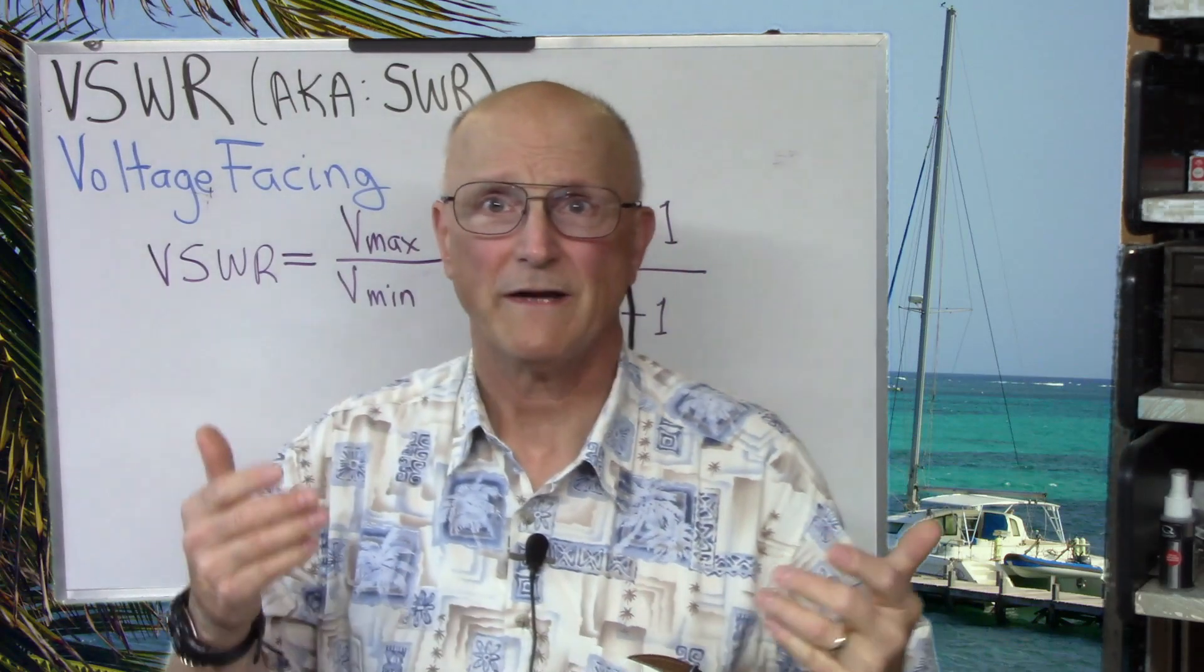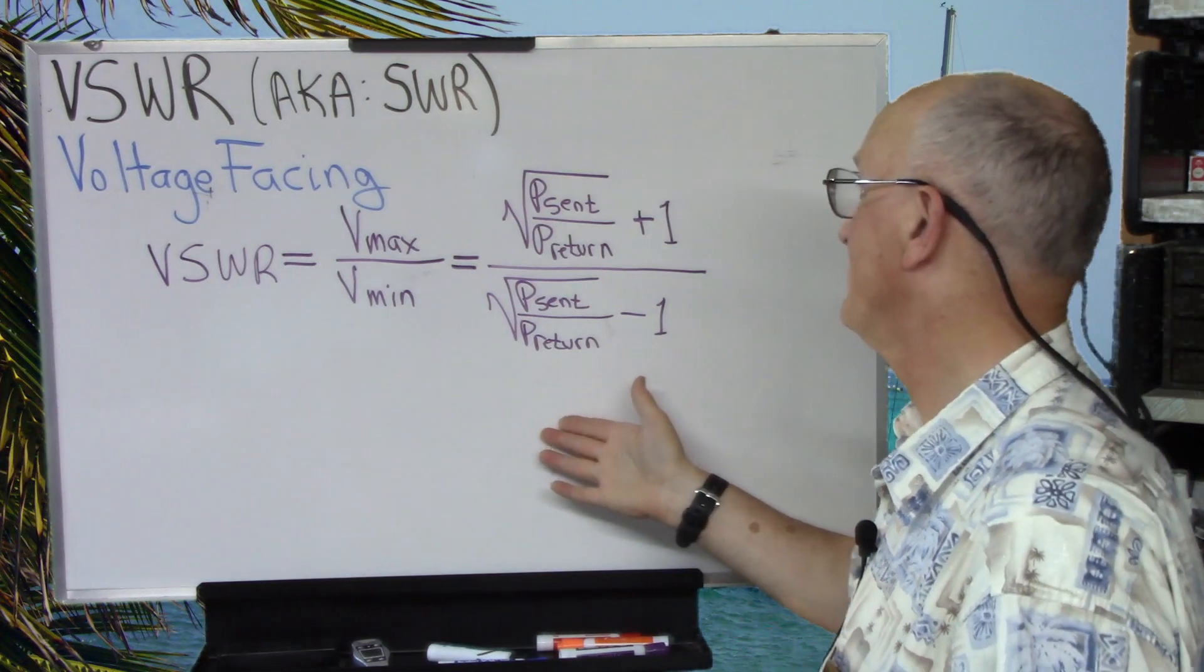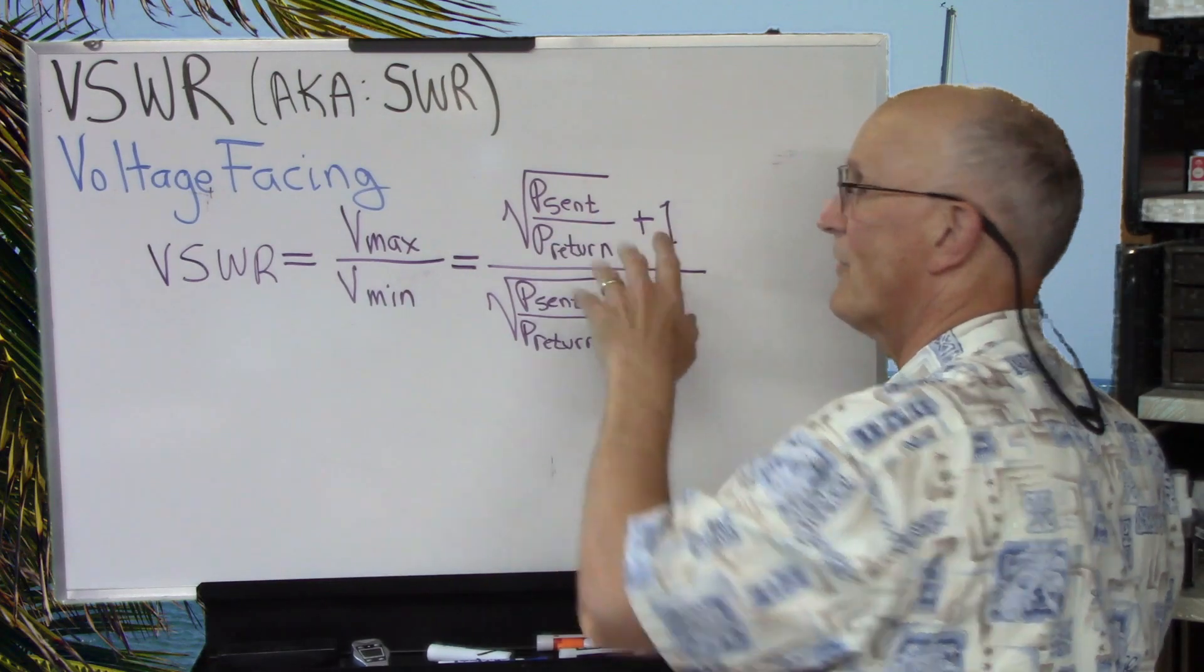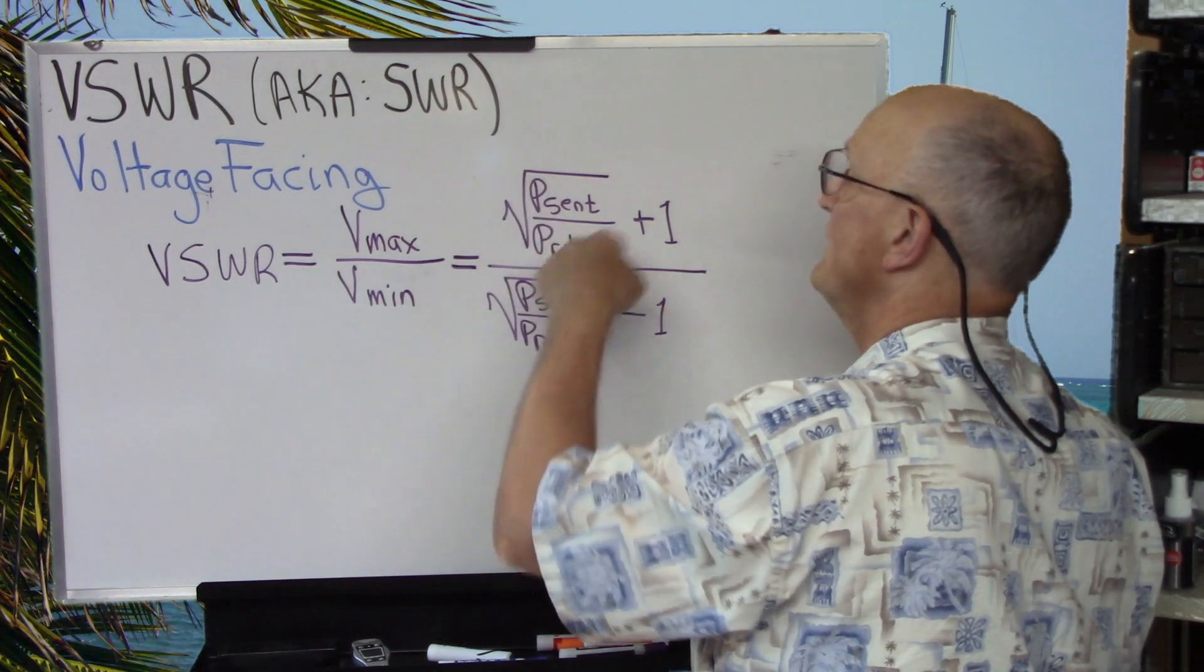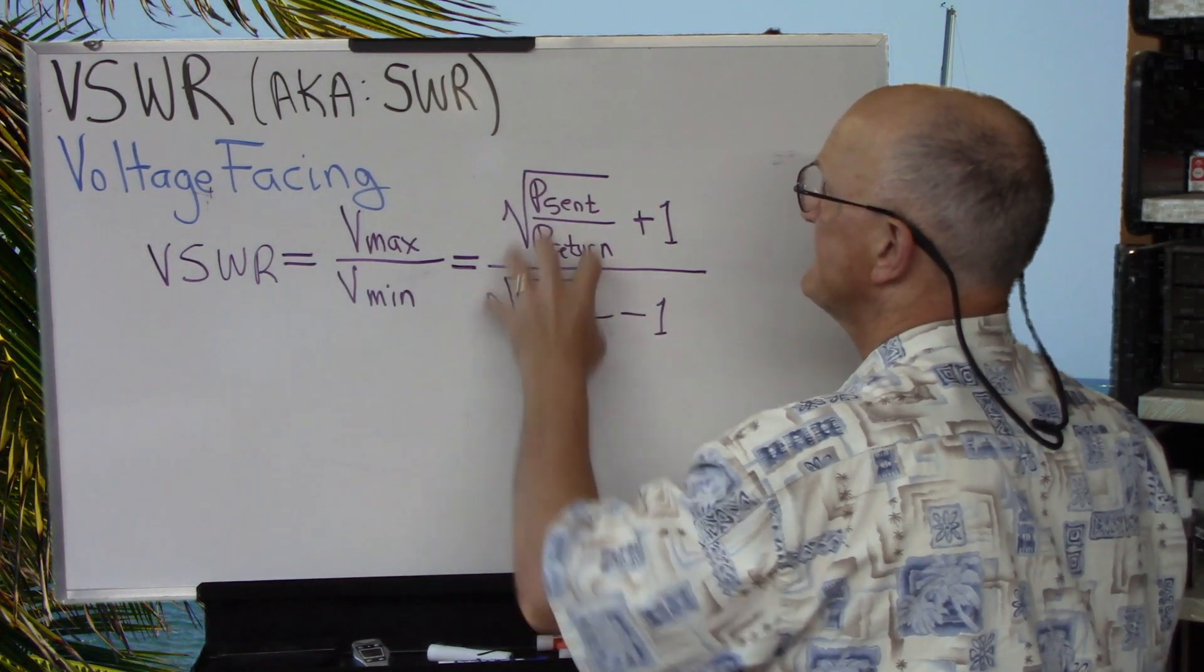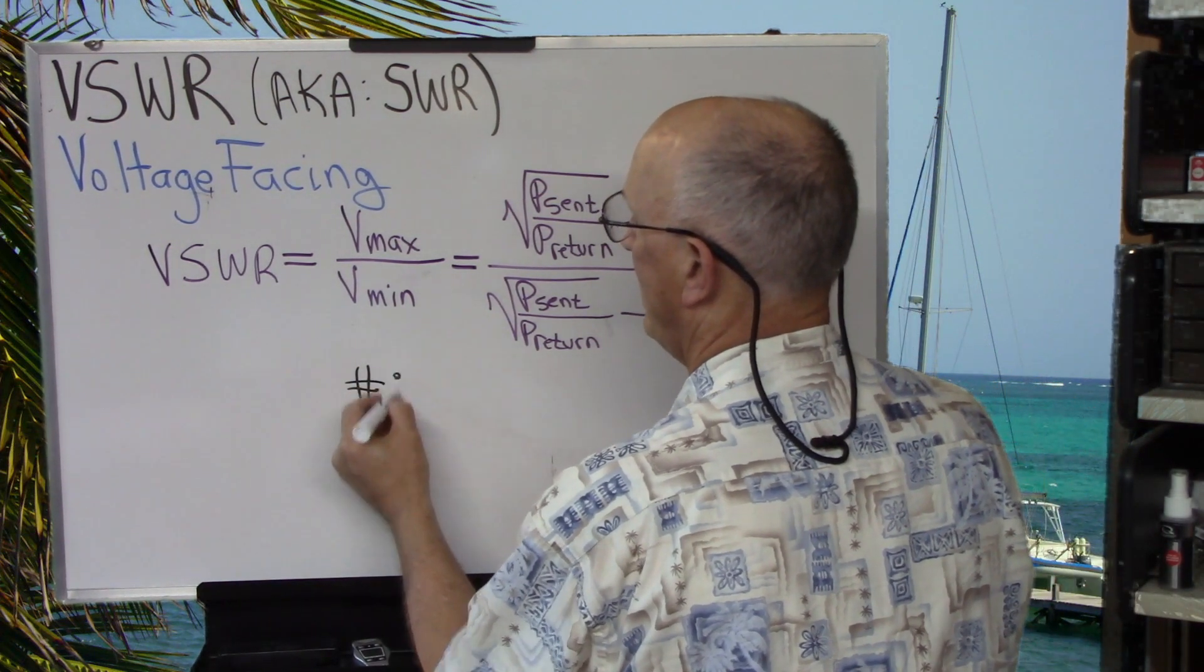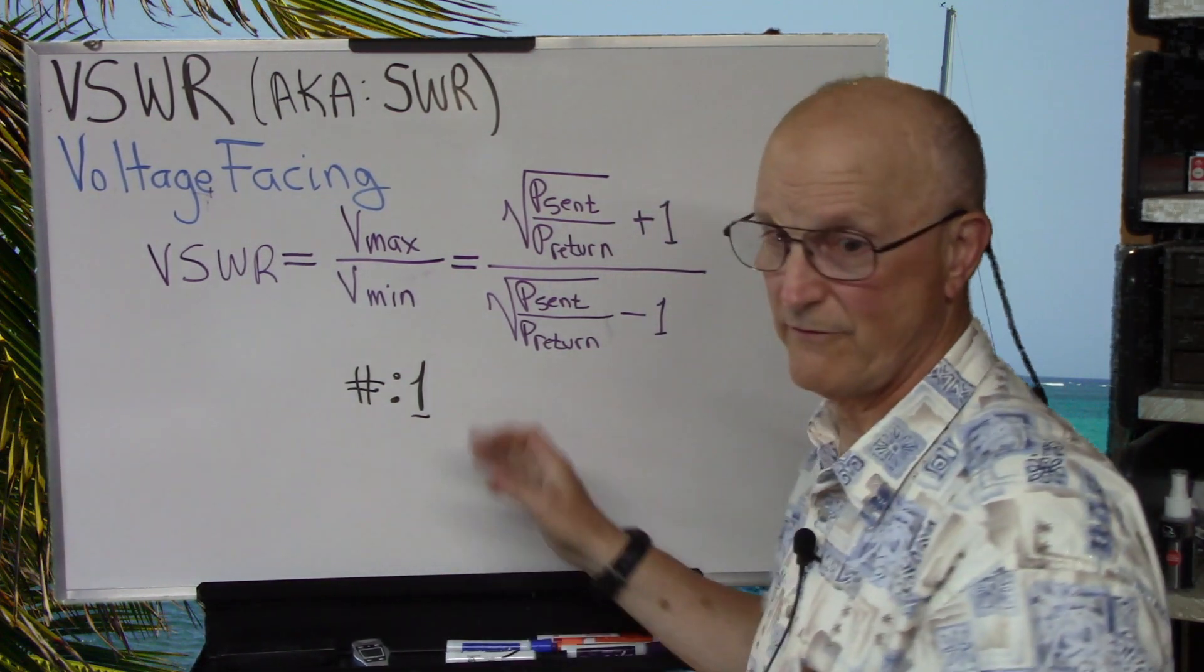But, for those of us that want to think of it in terms of power, this is the lovely equation that you need to be able to use. Now, we kind of reuse this part here. It's the power sent, it's the square root of the power sent or transmitted, divided by the power that is being returned. So, this you can reuse top and bottom. We take that entity, we add one and put it on the top, this same entity, and we subtract one and put it on the bottom. And then we end up with some number, and then we have a colon one. So, that might be 2 to 1, 1.5 to 1, whatever, but that's the equation.